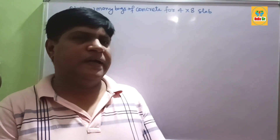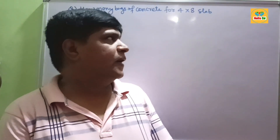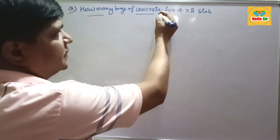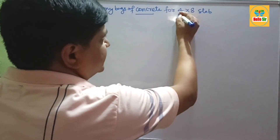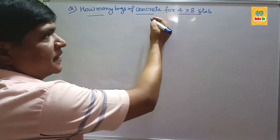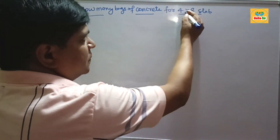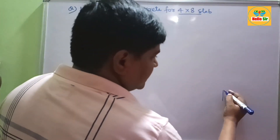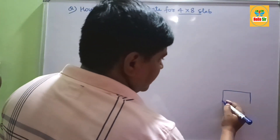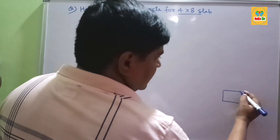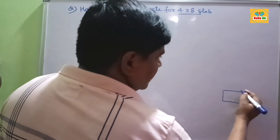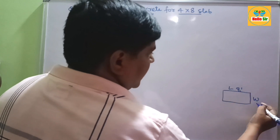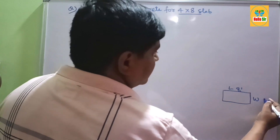Hi guys, today in this video we look at how many bags of concrete are required for a 4x8 slab — meaning how many concrete bags do you need. If your slab is 4x8, it means the length can be 8 feet and the width can be 4 feet.